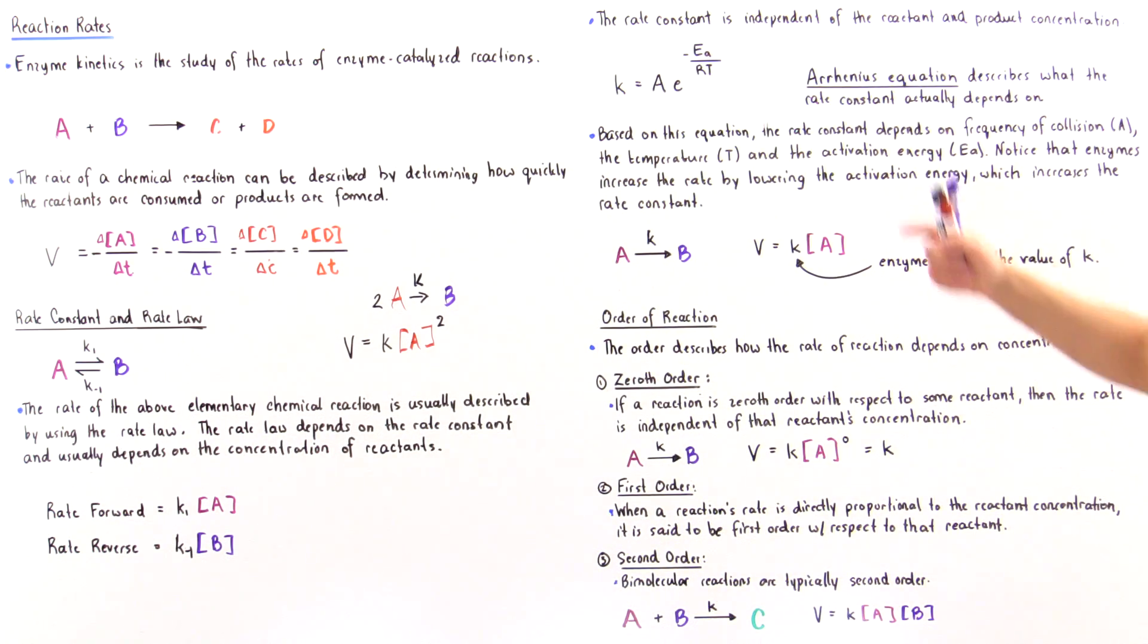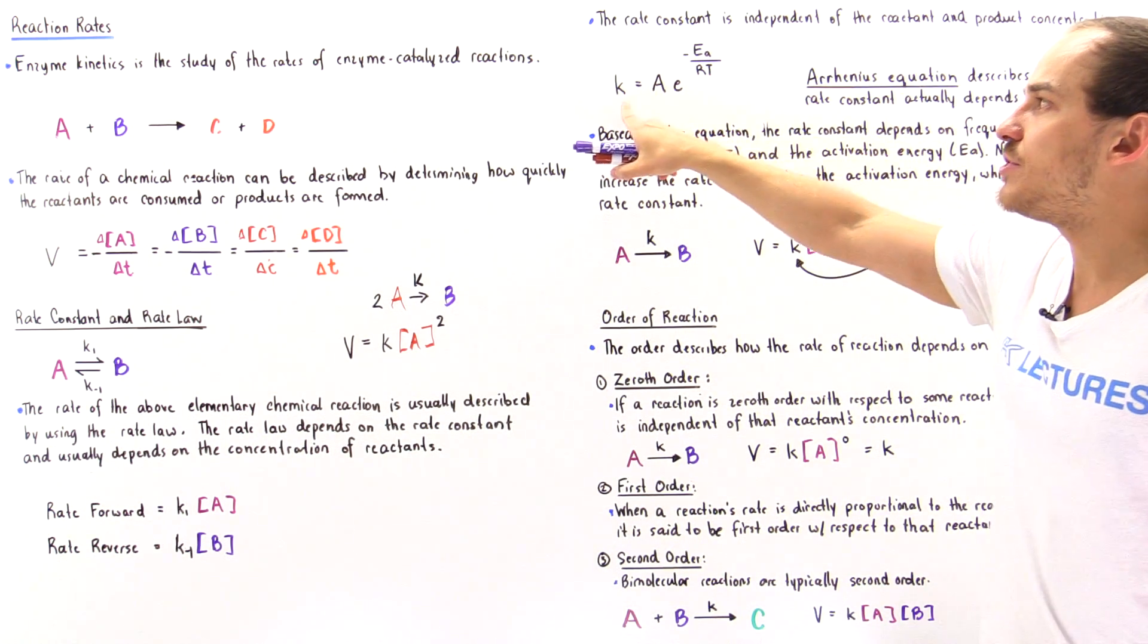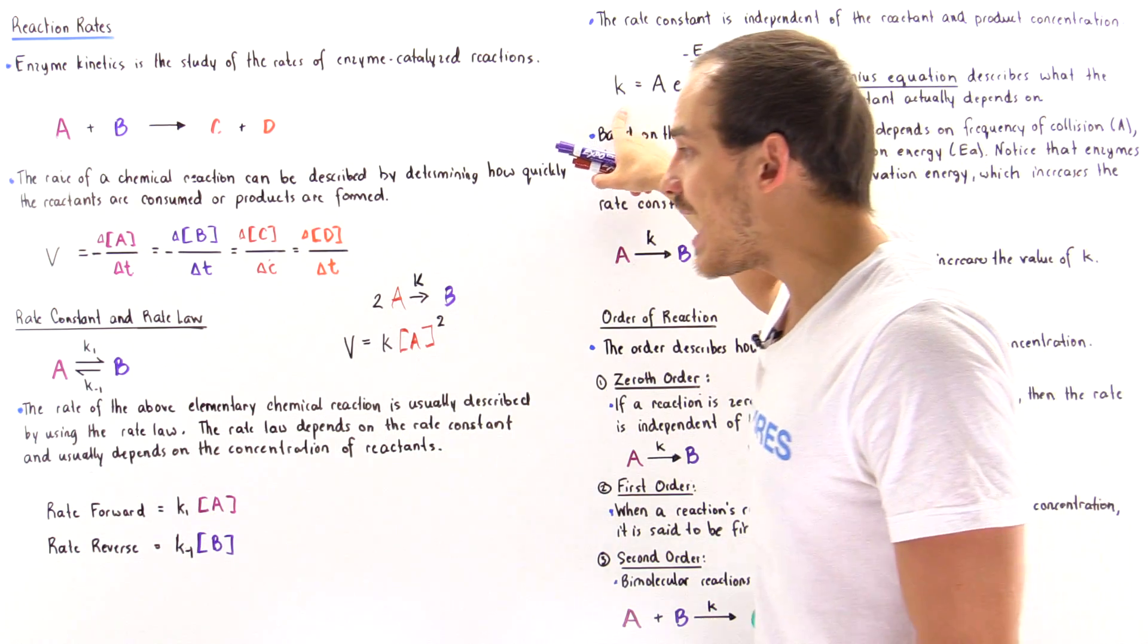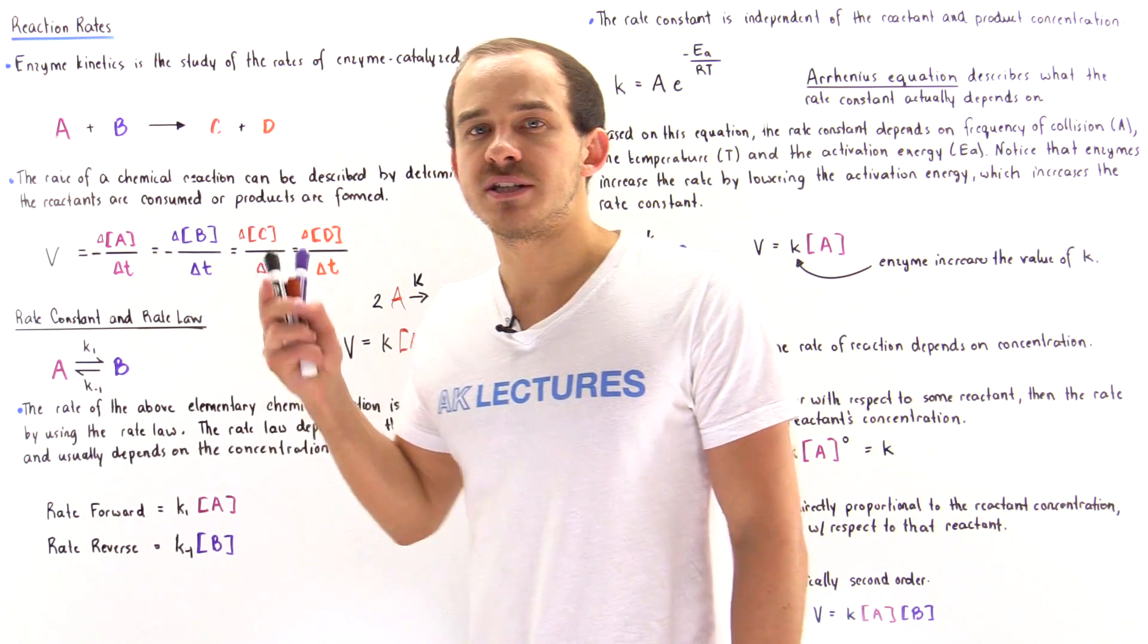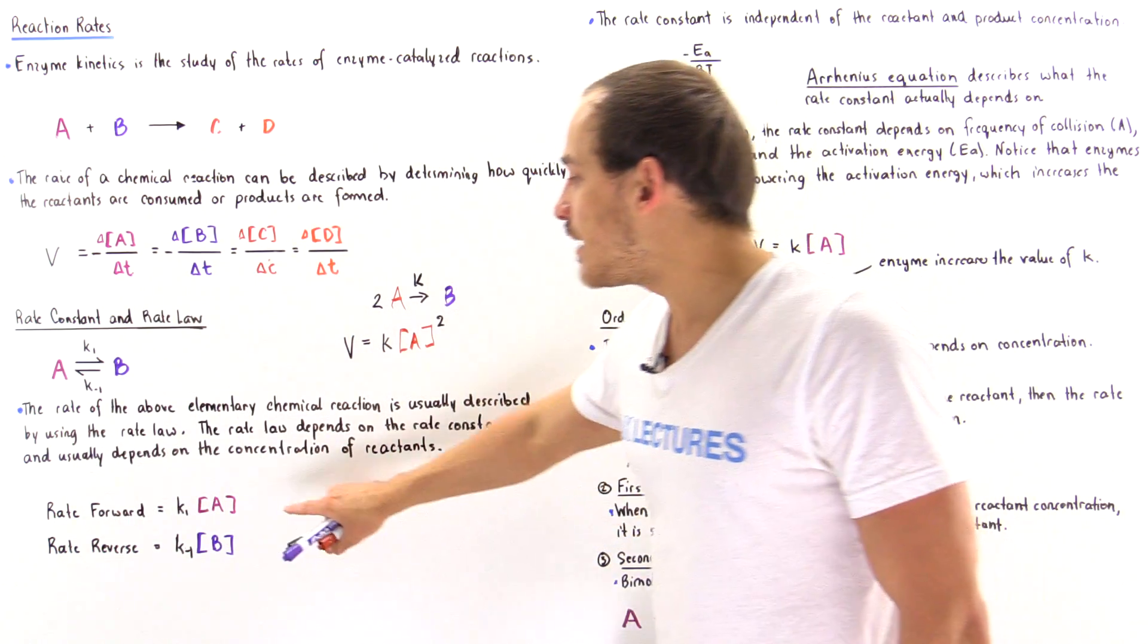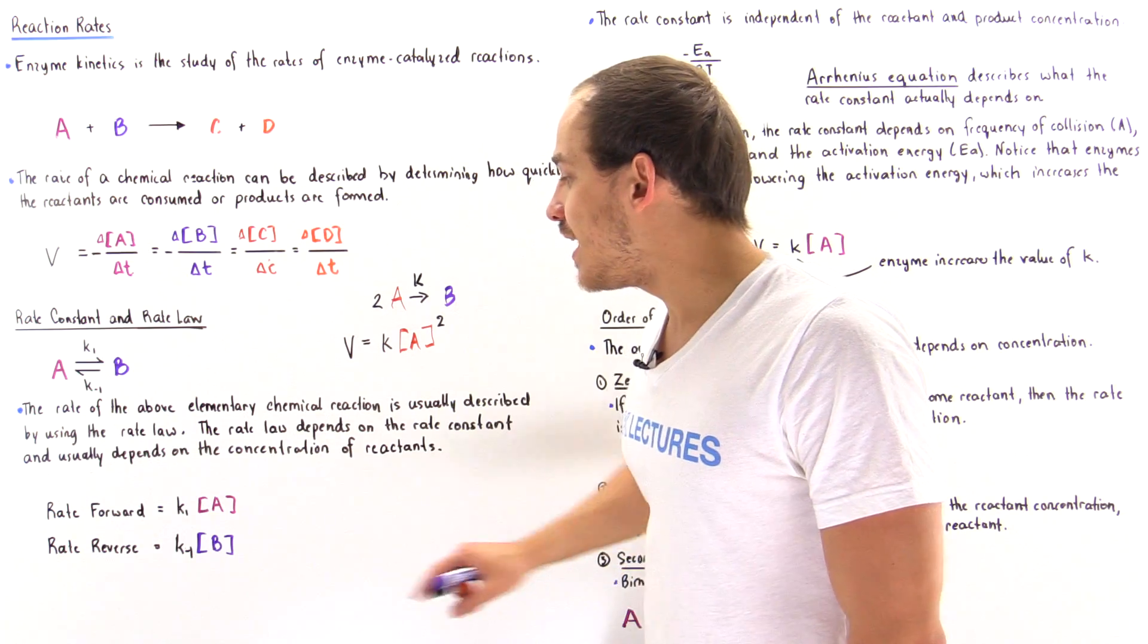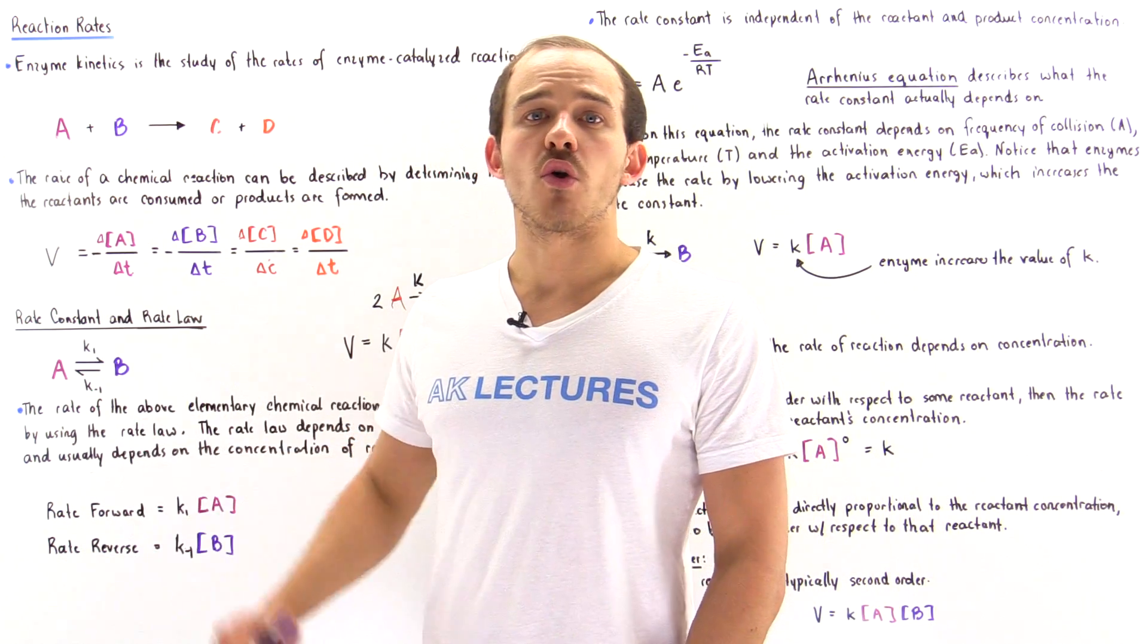Enzymes change the activation energy, which increases k, and that is what increases the rate and changes the rate law of that particular reaction. Enzymes do not actually affect the concentrations of the reactants or the products.